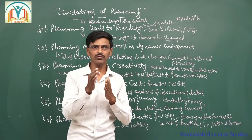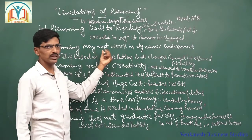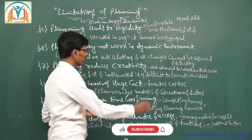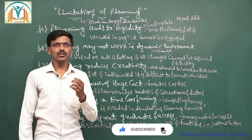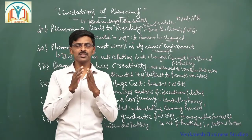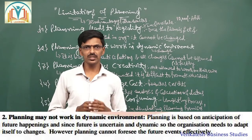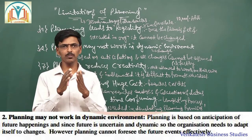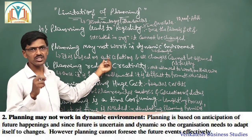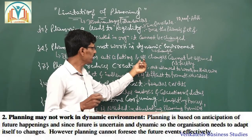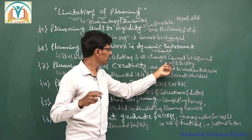The second limitation is that planning may not work in a dynamic environment. Dynamic means adapting to change. The environment is not constant — it is always changing in nature. Once you prepare a plan, if any changes occur in the external environment, your plan will not be achieved properly. Planning is completely based on anticipation and imagination, and we cannot assume all future happenings exactly.